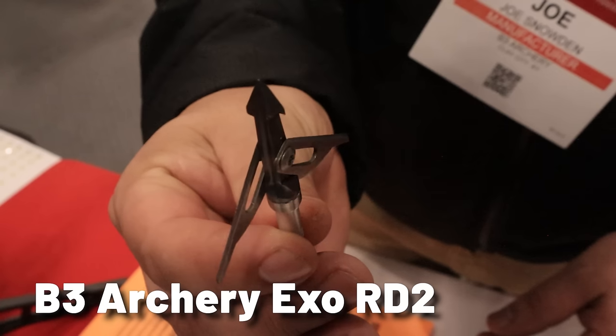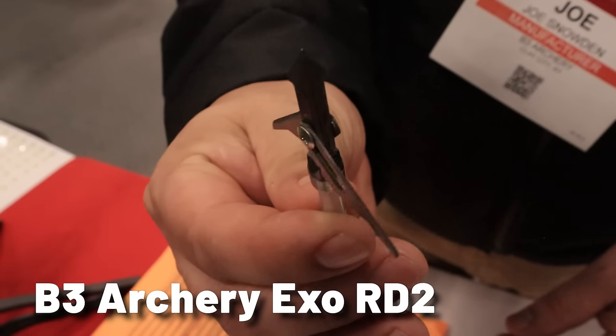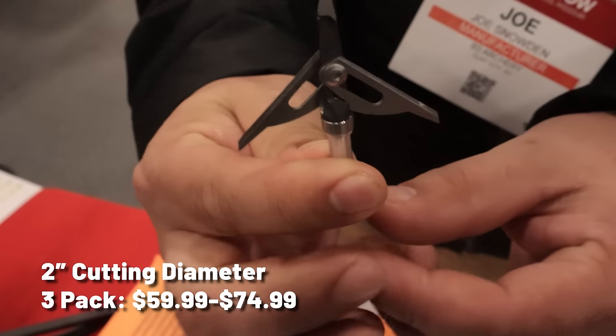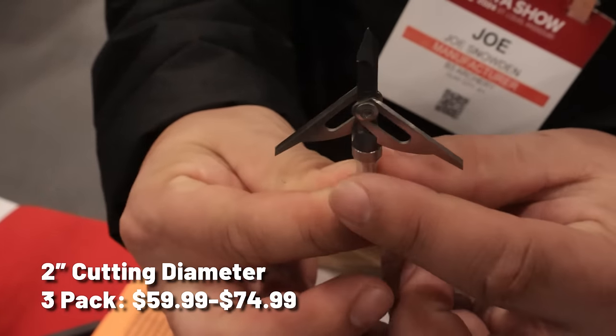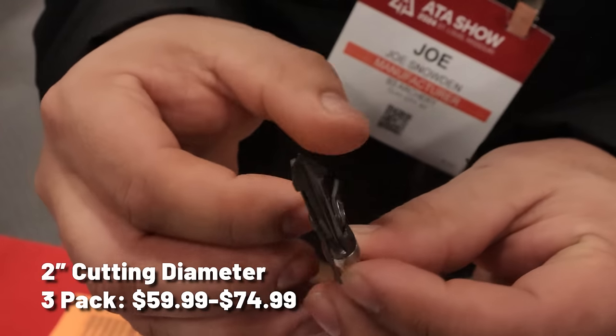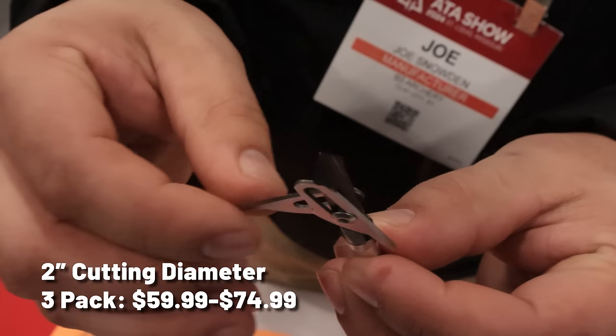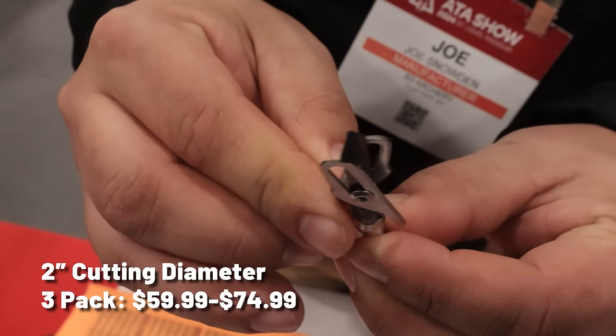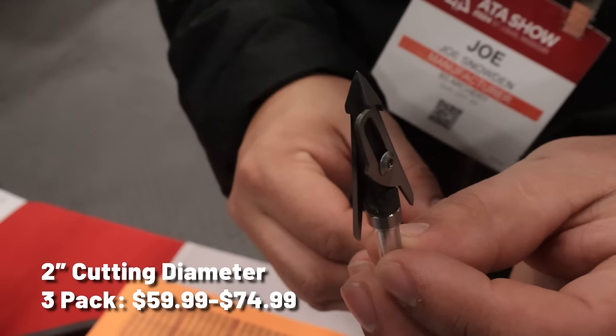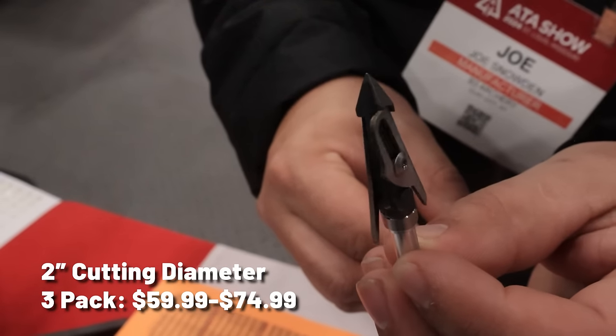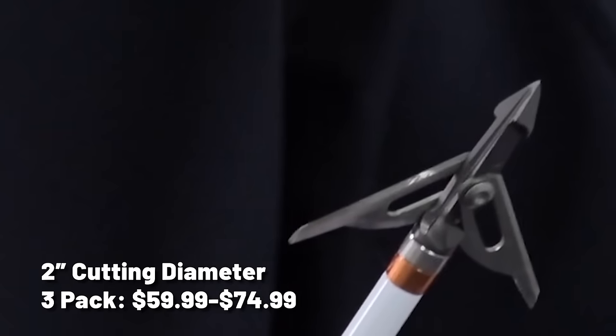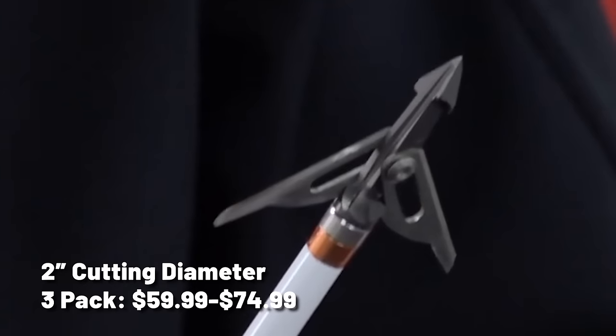B3 XO RD2. The RD2 is a rear-deploying 2-blade broadhead from the folks over at B3 Archery. A combination of the flat blade design and a grommet that sits between the blades and the ferrule holds the blades closed during flight. Upon impact, the RD2 deploys to a wide 2-inch cutting diameter, and thanks to the built-in blade stops, the blades aren't able to damage your arrow on impact or while passing through the animal. These crossbow-approved broadheads are available in your choice of either aluminum or titanium ferrule. They feature a pair of 39,000-thick stainless steel blades to handle the cutting duties. A package of the three aluminum heads will cost you $59.99, while the titanium version sells for $74.99.